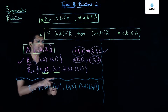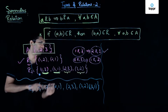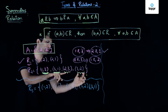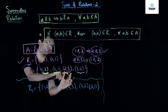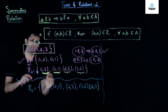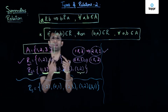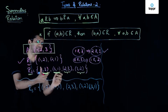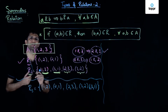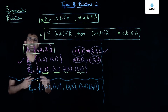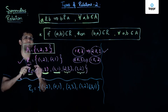Similarly, checking the ordered pairs (2,3) and (3,2): (2,3) implies (3,2) is also part of R2, and likewise (3,2) implies (2,3) is also part of R2. So whenever the first and second coordinates of every ordered pair are swapped and the resulting ordered pair also lies in R2, we conclude that R2 is a symmetric relation on set A.